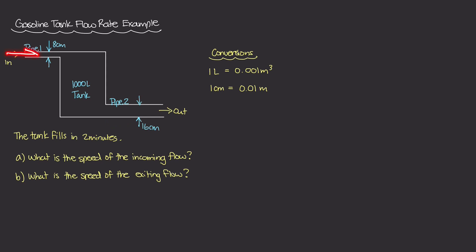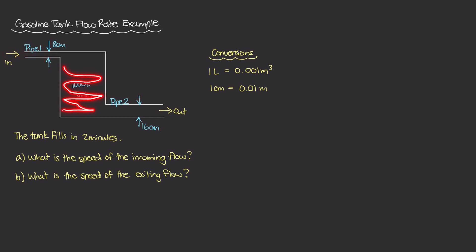In pipe one, the gasoline is entering, and in pipe two, it is exiting. There are a couple of givens in the problem. The first is that the tank itself can fill in two minutes. If we put a stopper at pipe two and just turned on the gasoline, it would start filling up the tank from the bottom, taking exactly two minutes to be fully filled.